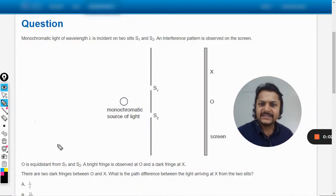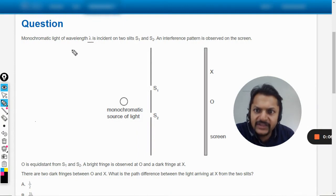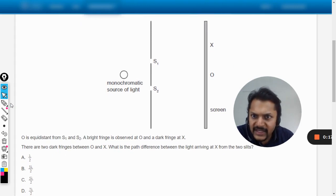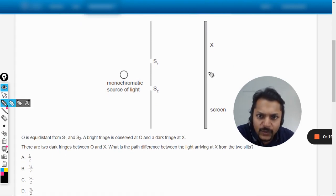Okay dear students, let us see what is in this question. Monochromatic light of wavelength lambda is incident on two slits s1 and s2. An interference pattern is observed on the screen. O is equidistant from s1 and s2.